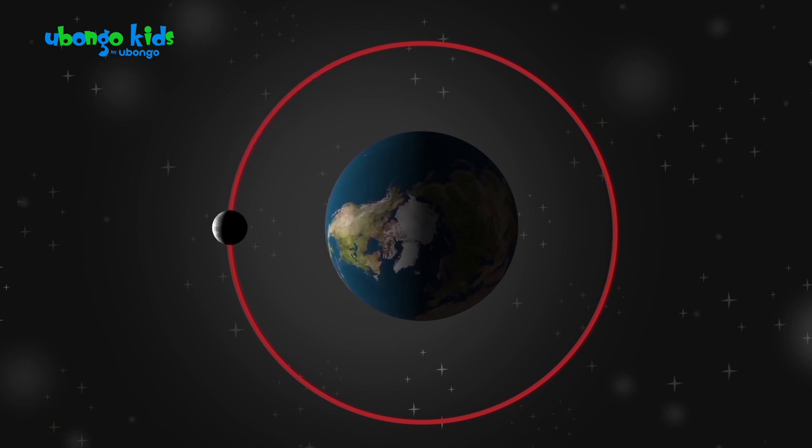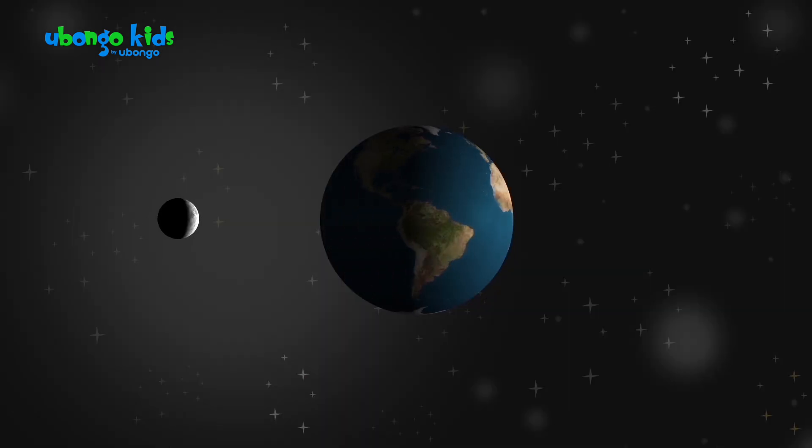The moon moves in a circle around the Earth. The moon cycle takes a full month. That's why each month, as the moon orbits the Earth,